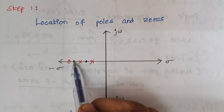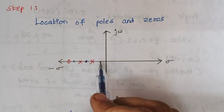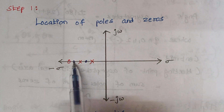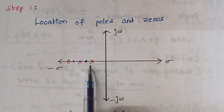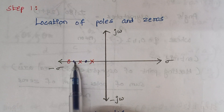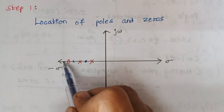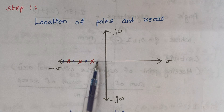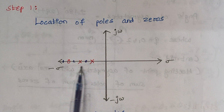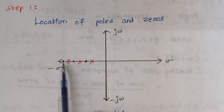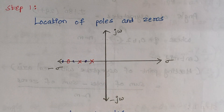If you consider another test point where two poles are to its right, that is an even number, so there is no root locus at that point. If another test point has three poles and zeros to its right — 1, 2, 3 — that is an odd number, so root locus exists from the origin to that test point. This completes step 2.